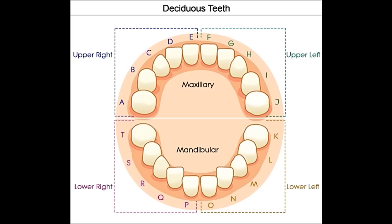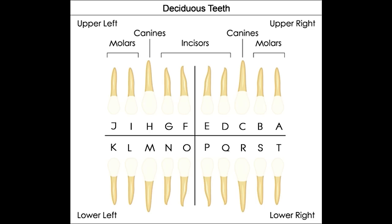Palmer notation system — mainly used by some orthodontists, pedodontists, and oral surgeons — is the method followed by dentists in the United Kingdom. It was earlier called the Sigmundi system, after Adolf Sigmundi, a dentist from Hungary who proposed tooth numbering in 1861. The teeth were divided into four quadrants, and adult teeth in each quadrant were numbered 1 to 8, whereas the 20 primary teeth were depicted using Roman numerals I, II, III, IV, and V to number the teeth from the midline.